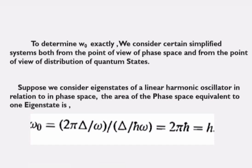To determine Ω₀ exactly, we consider systems from both the point of view of phase space and from the point of view of the distribution of quantum states. This dual approach is how we understand the problem.